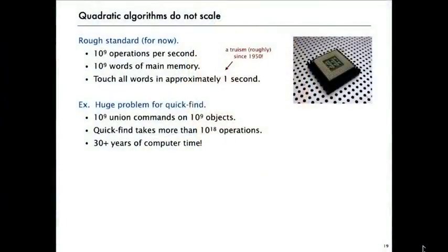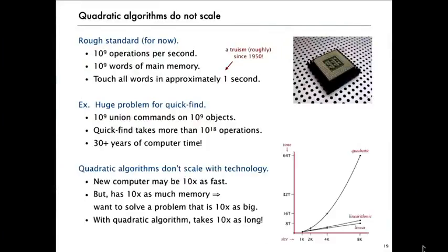With that huge memory we can address huge problems—we could have billions of objects and hope to do billions of union commands on them. But the problem with the quick-find algorithm is that would take 10 to the 18th operations, or array accesses. If you do the math, that works out to 30 some years of computer time—obviously not practical. The problem is that quadratic algorithms don't scale with technology. You might have a new computer that's 10 times as fast, but you can address a problem that's 10 times as big, and with a quadratic algorithm it's going to be 10 times as slow. That's the kind of situation we're going to try to avoid by developing more efficient algorithms.